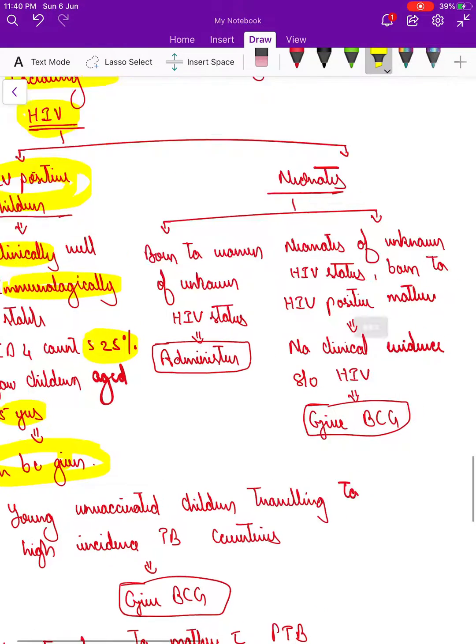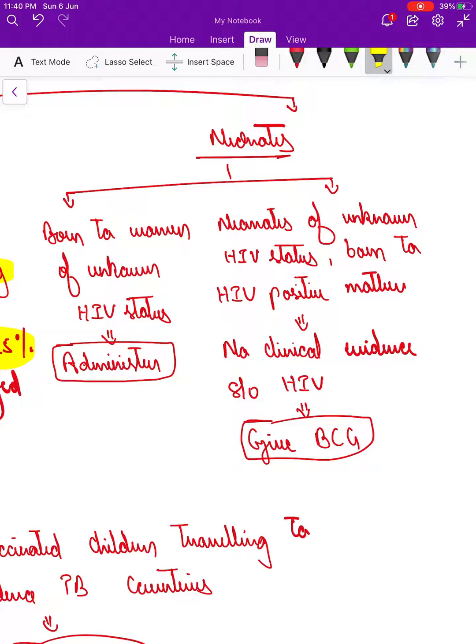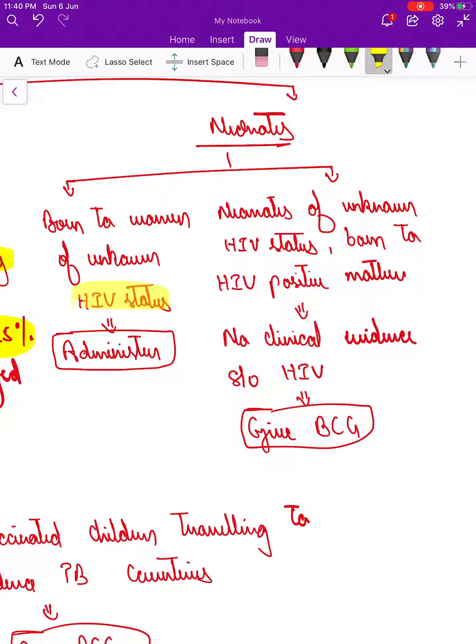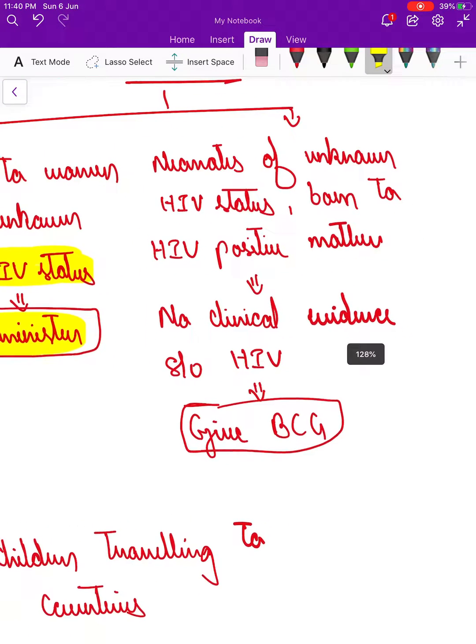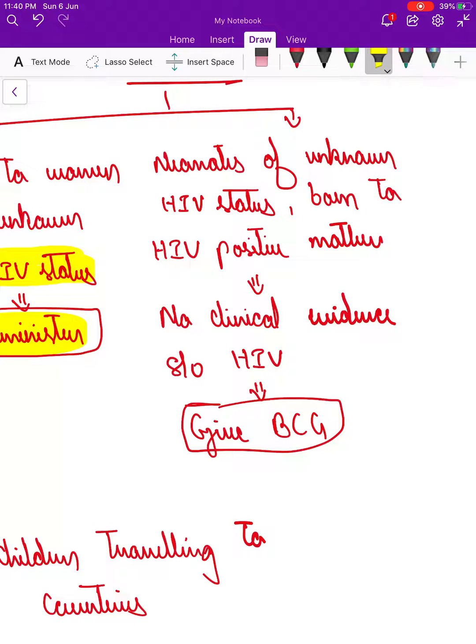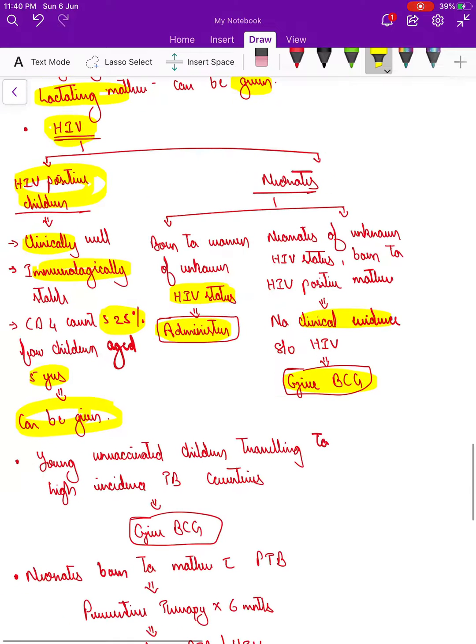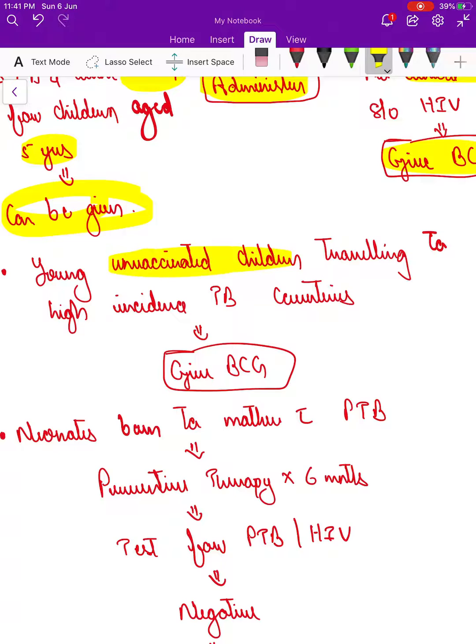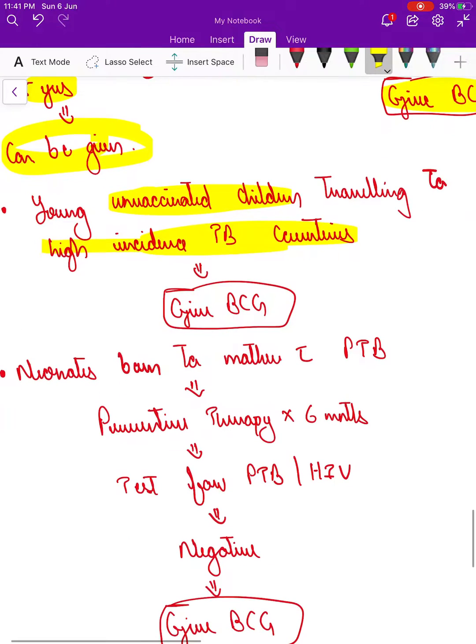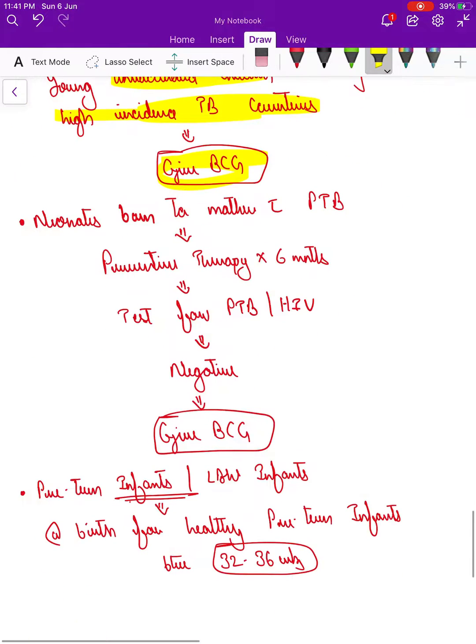Let's see neonates. A child is born and we don't know the HIV status of the mother. What do we do? We go ahead and administer the vaccine. Risk versus benefit ratio—it's better to give the vaccine. If the child is born to an HIV positive mother and we know the status, if the child has no clinical evidence suggestive of HIV, we go ahead and give BCG regardless of whether the mother is taking ART or not. If a young unvaccinated child is traveling to high incidence TB countries, please go ahead and vaccinate.